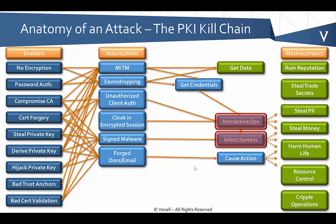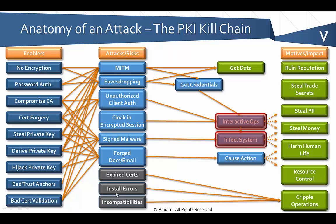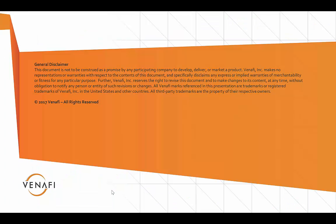Looking at what an attacker is really trying to do with PKI and certificates, it's leveraging PKI vulnerabilities to either perform interactive operations or infect a system. Some organizations can inflict these types of problems on themselves by engaging in bad practices such as not managing certificates well or letting them expire, which can cripple their operations. This gives an overall view of how PKI can contribute to an attacker achieving their goals, or an organization falling into this trap through bad management practices. That's the end of our overview of the anatomy of attack in a PKI kill chain. Thanks.